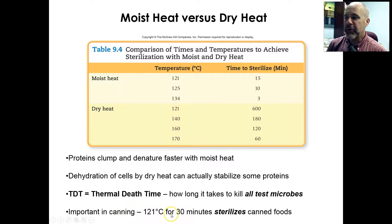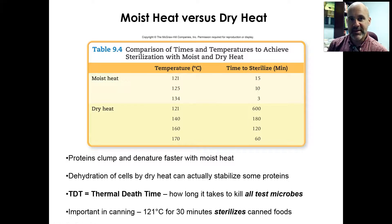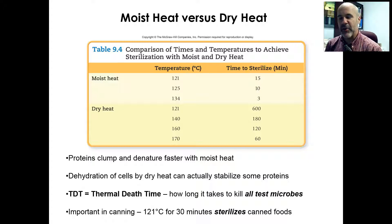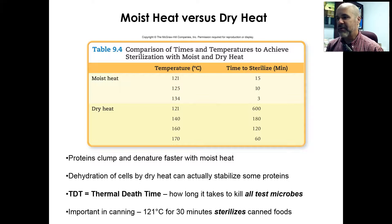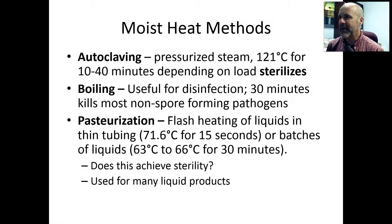By the way, your textbook also mentions canned goods. When items go through a canning process, if you want to sterilize the canned goods inside the can, they've got to be exposed to 121°C for about 30 minutes to make sure everything inside the can is sterilized. That's why those canned vegetables are kind of mushy — they've been cooked inside the can to try to get rid of any microorganisms that are present.